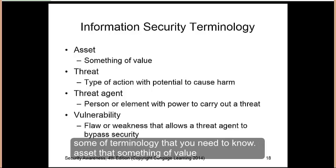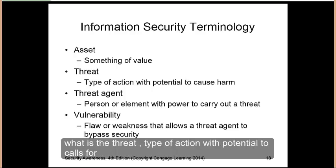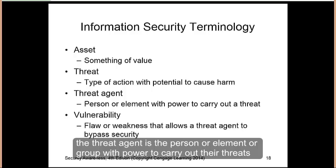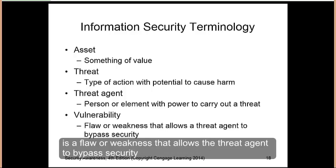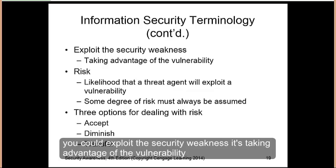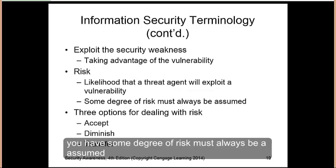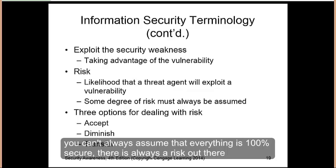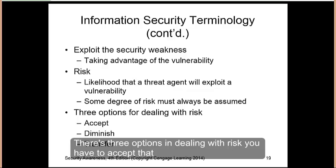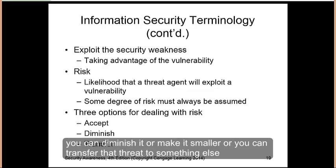Some terminology you need to know: an asset is something of value. A threat is a type of action with the potential to cause harm. The threat agent is the person, element, or group with the power to carry out that threat. Vulnerability is the flaw or weakness that allows the threat agent to bypass your security. You can exploit a security weakness — that's taking advantage of the vulnerability. Risk is the likelihood that a threat agent will exploit a vulnerability. Some degree of risk must always be assumed. There are three options in dealing with risk: accept it, diminish it, or transfer it.